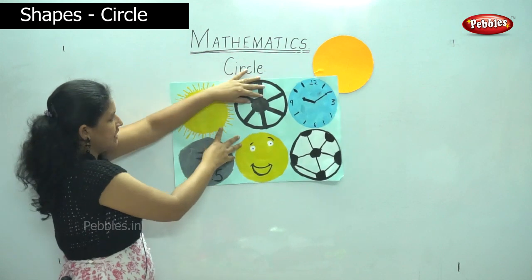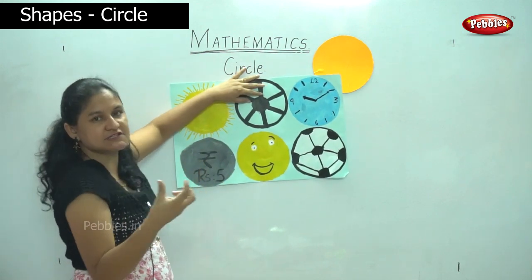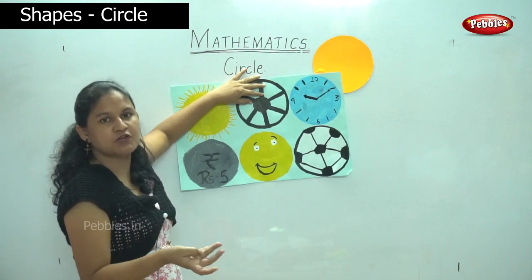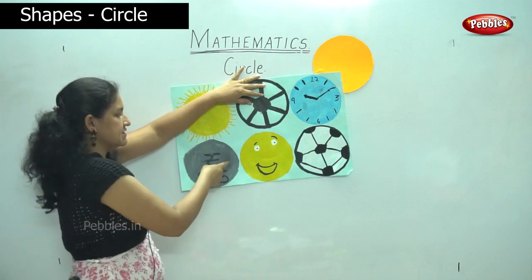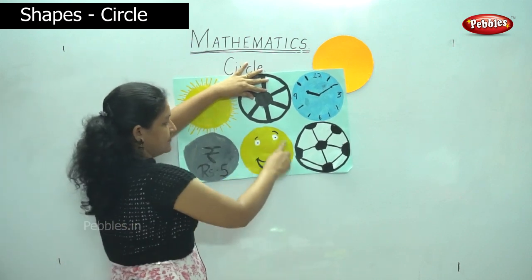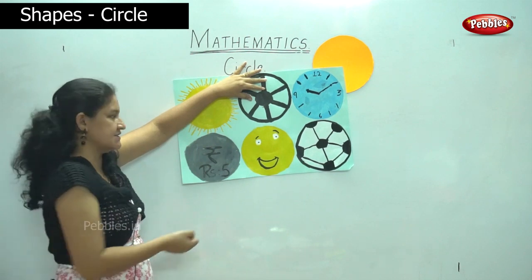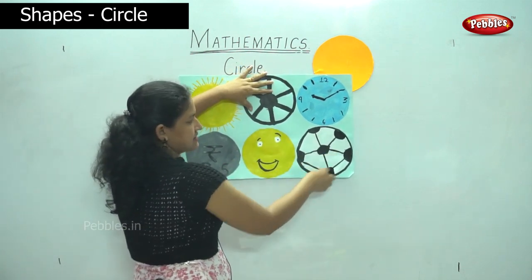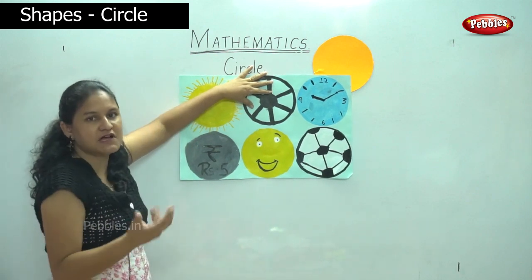Then we have coins: the 5 rupee coin, the 1 rupee coin, the 2 rupee coin, and the 10 rupee coin — all round in shape. Next we have our beautiful smiley faces, which are round. And the last is the football and the basketball that we use — all round.